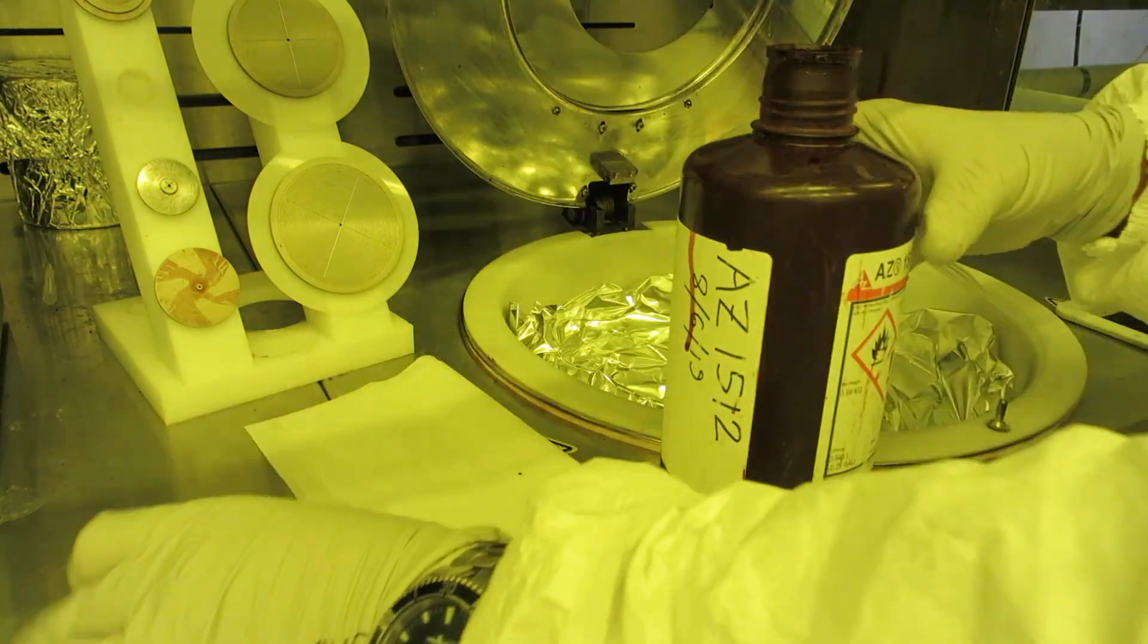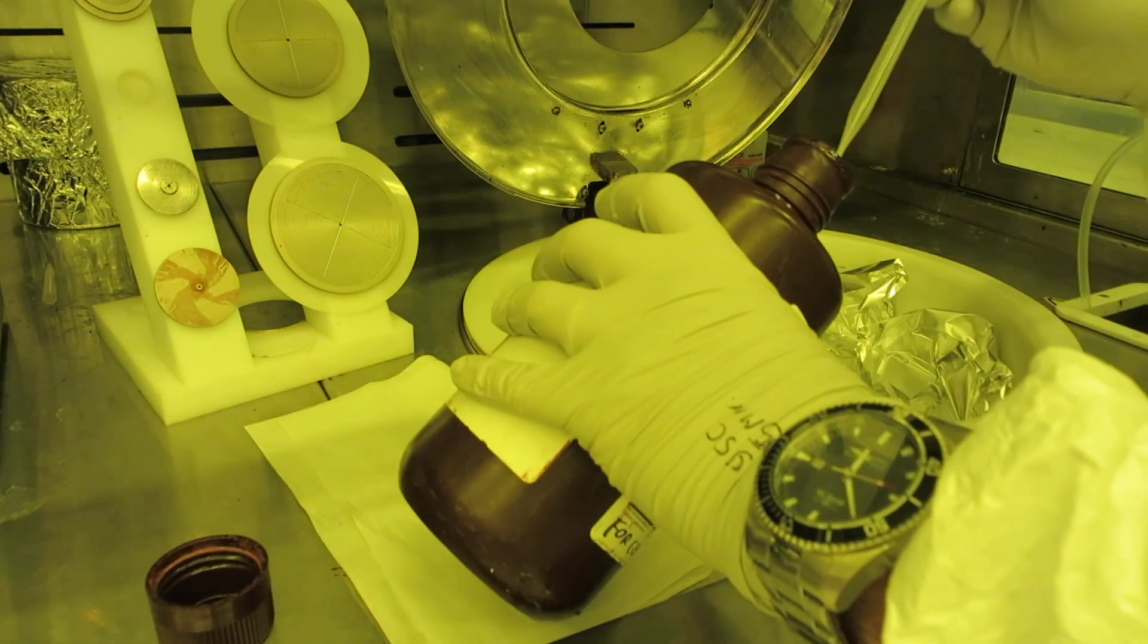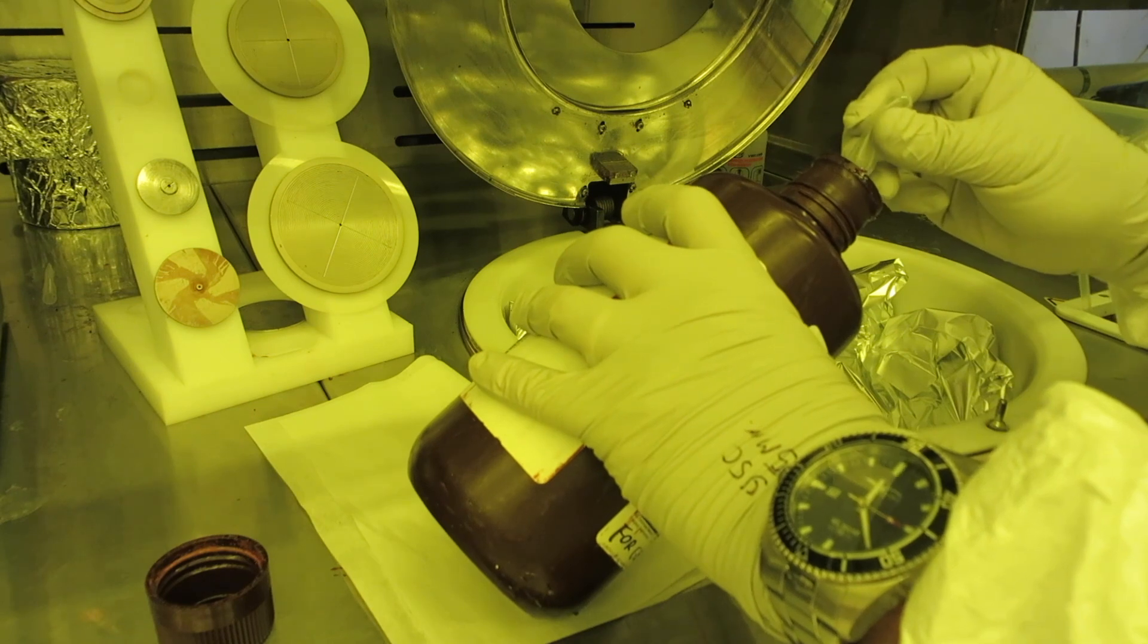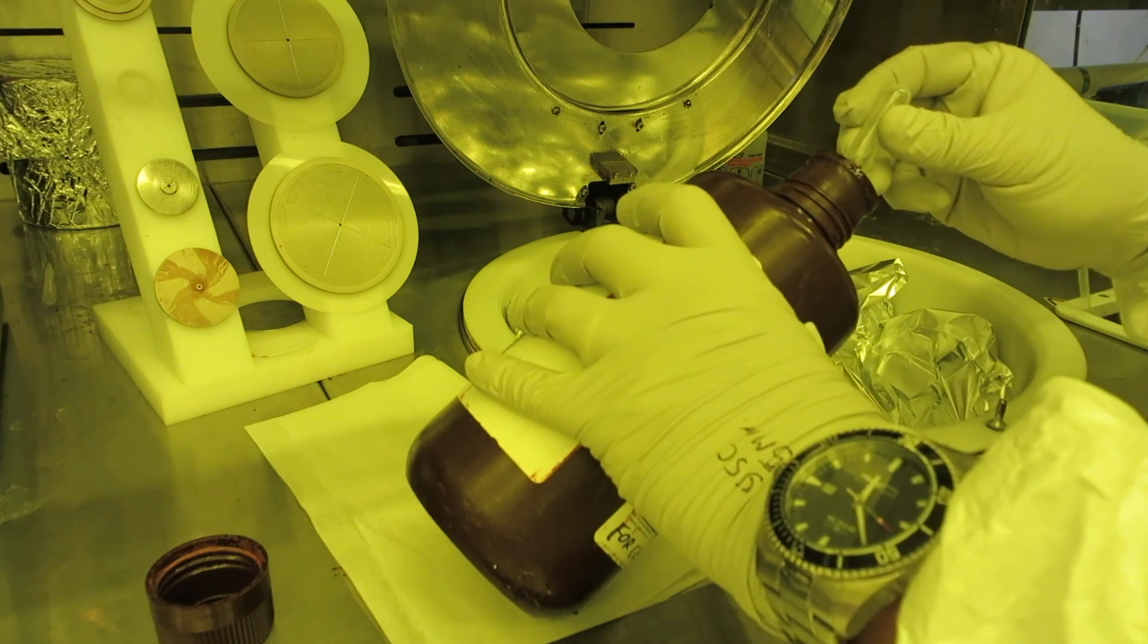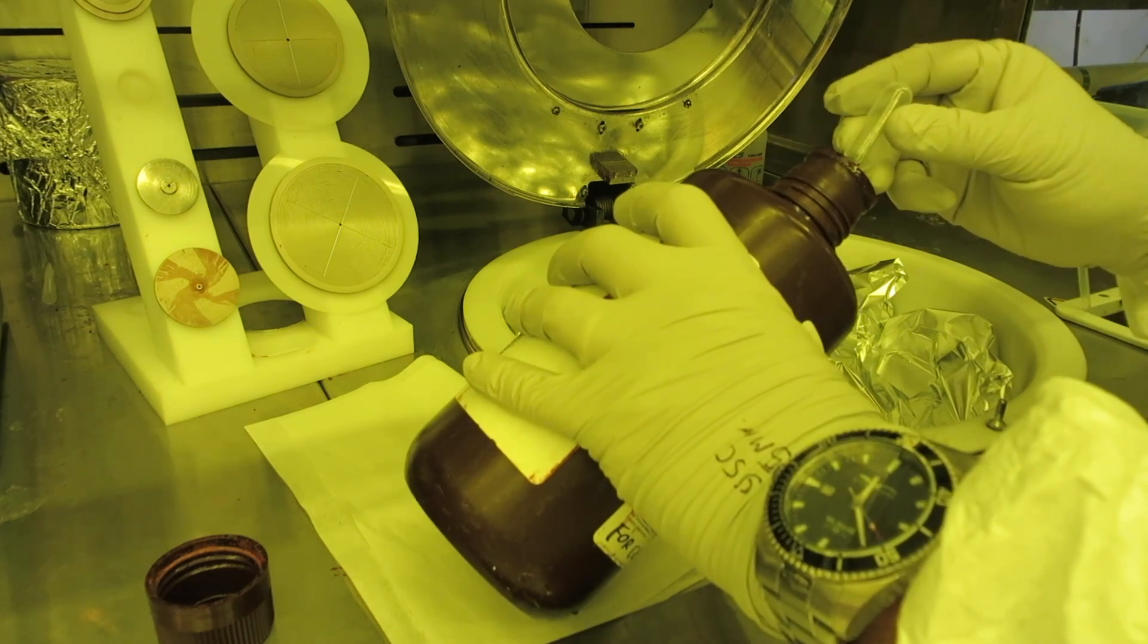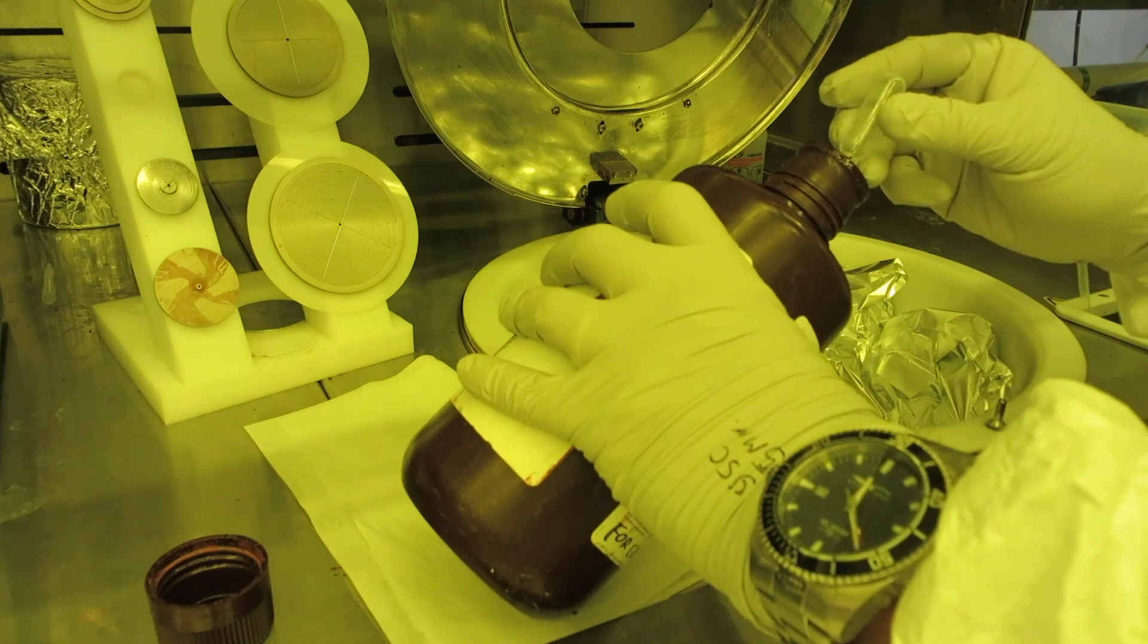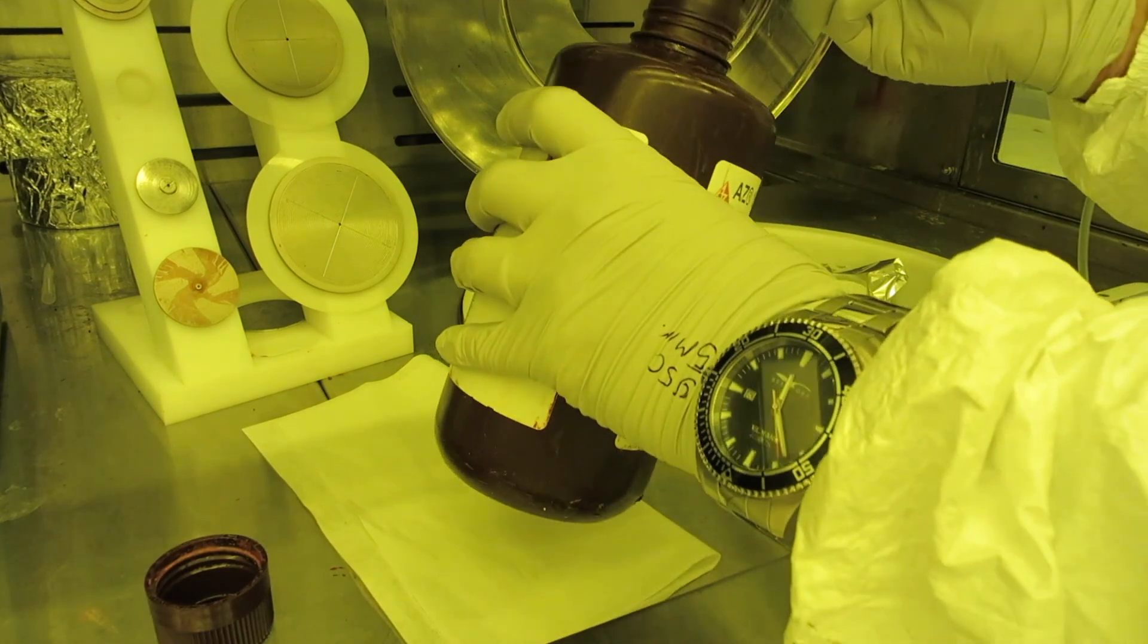Now you're ready to start dispensing some resist onto the chip. Open the bottle and tilt the bottle. Squeeze the pipette and stick it into the resist and allow the resist to slowly flow up into the pipette. That will help you to keep from getting bubbles in the resist.